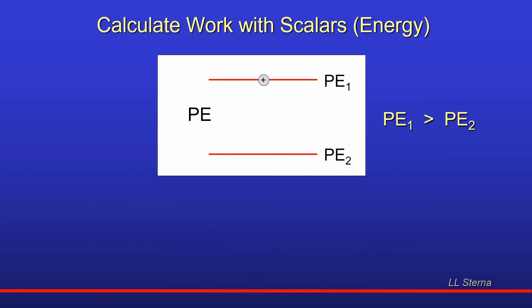We're now going to look at the same problem of calculating the work on a charge, but this time we're going to use energy — a scalar — to calculate the work. The charge is sitting at a level of potential energy PE1, and is free to move to a lower level of potential energy PE2. We do not need to discuss force. It is a simple fact that if an object is free to move from a higher level of potential energy to a lower level, it will do that. Objects tend to go downhill.